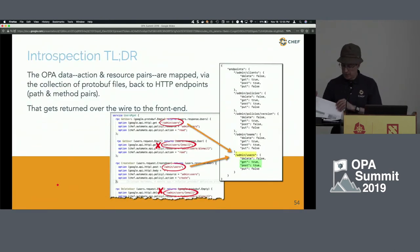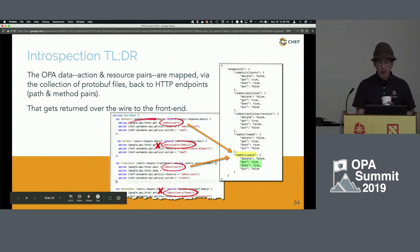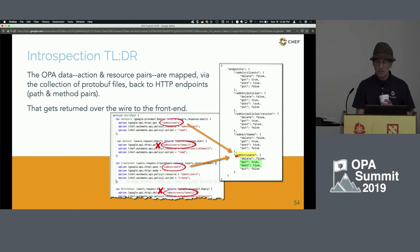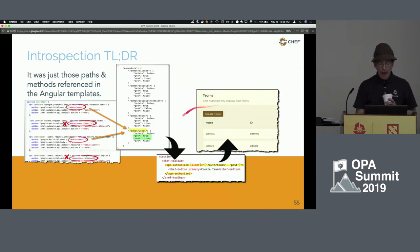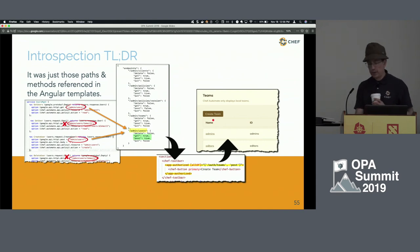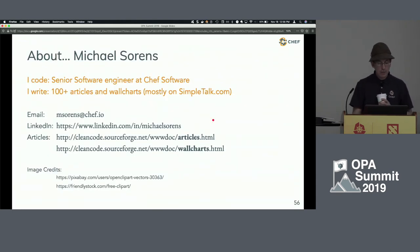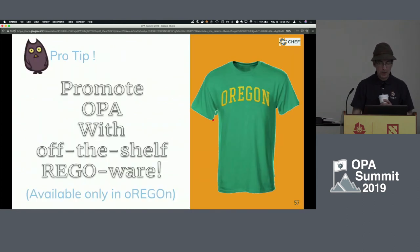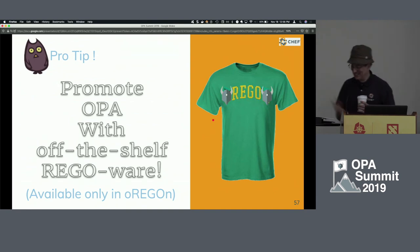The TL;DR of introspection: we take from the front end the HTTP endpoints, which are mapped via protobufs to find the action and resource. Those go through our AuthZ system and come back with a map of endpoints — for a given URL, these are the HTTP methods with their true or false permissions. That is exactly what was needed back in the front-end HTML template, where the same URL and HTTP methods determine whether the create team button gets rendered. That's basically it — thank you.